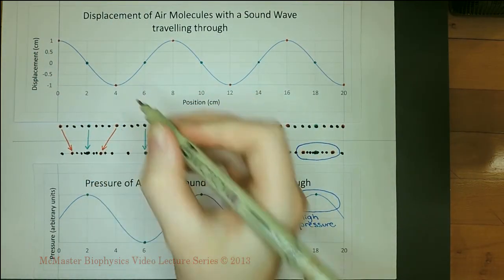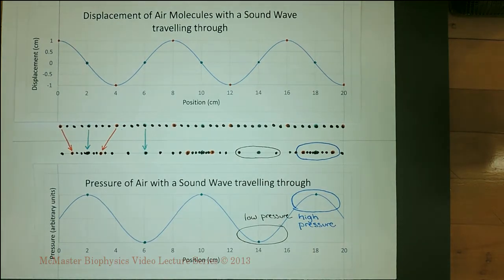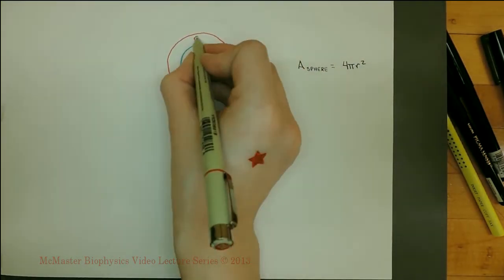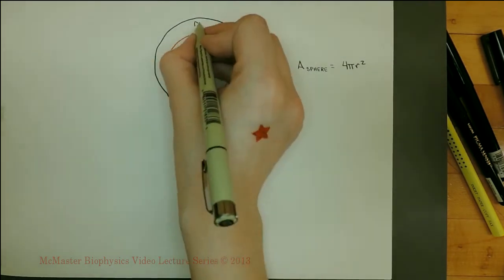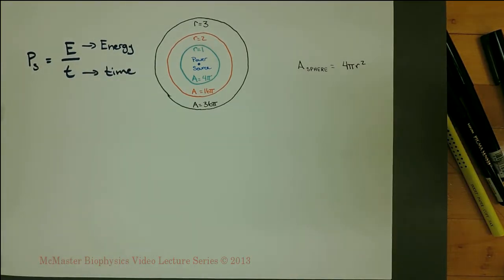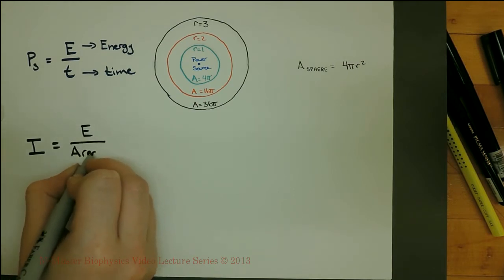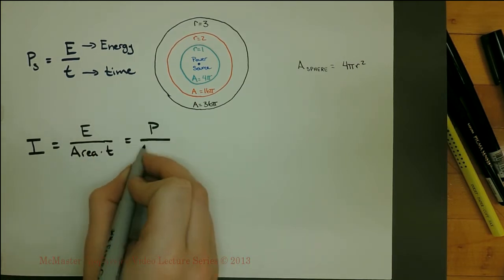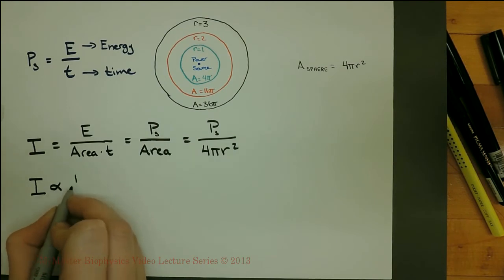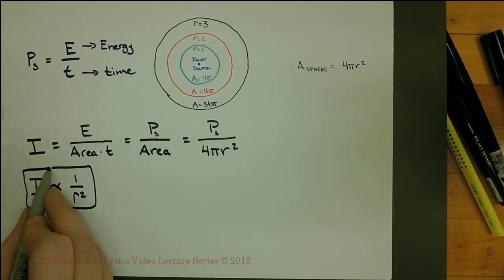The first red dot moves one centimeter in the positive x direction, to the right. The second red dot has maximum negative displacement, so it moves one centimeter to the left. When we travel further from the source of a sound, the area covered by the sound wave increases by a factor of r squared, as a growing sphere does. The power of a source is equal to the total energy over the time. The intensity of a sound is equal to the power over the area. If the power of the source is constant, then the intensity will drop off by a factor of r squared as we travel further from the sound.